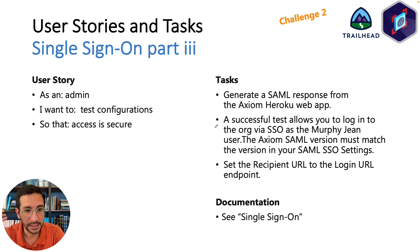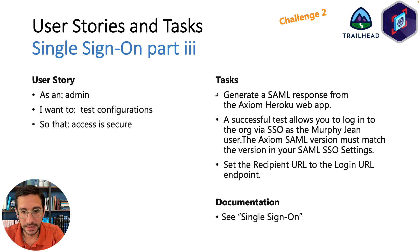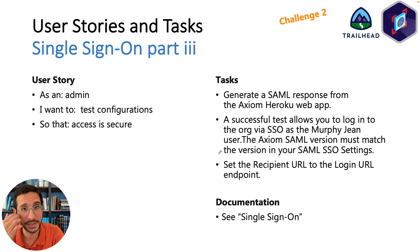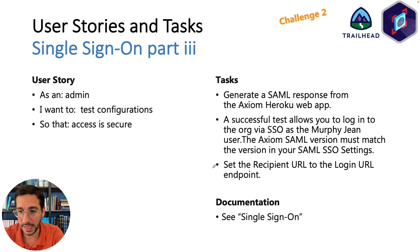The next part is to test configurations for an admin and make sure that's secure. You're going to actually have to generate the SAML response. A successful test allows you to log in as Murphy Gene. The Axiom SAML version must match the versions in your SAML SSO settings. Then set the recipient URL to the login URL endpoint, so make sure those are all configured correctly.